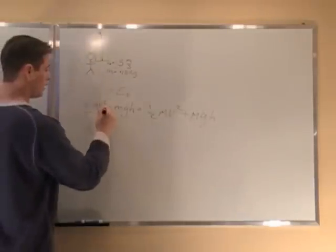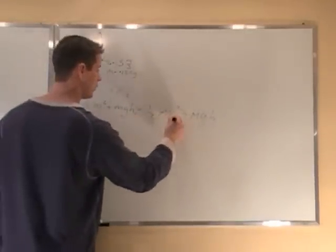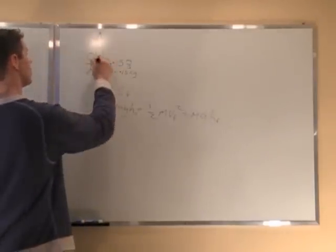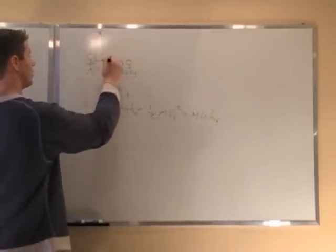So this is v initial, height initial, v final, height final. So this is our start, this is our stop, initial, final.